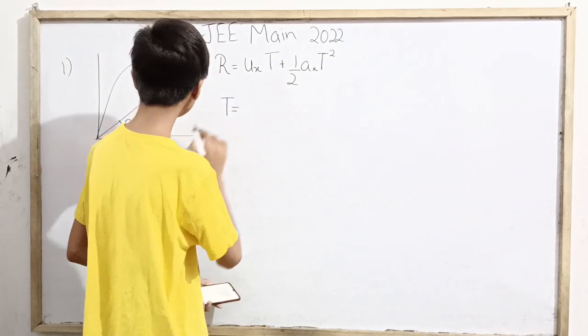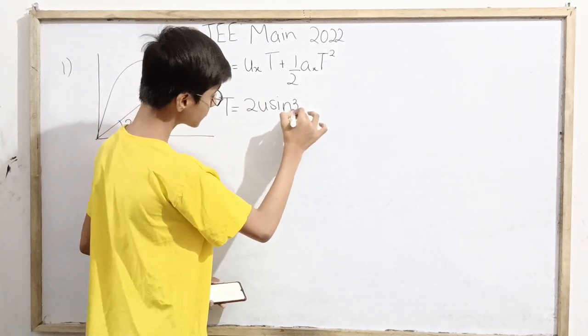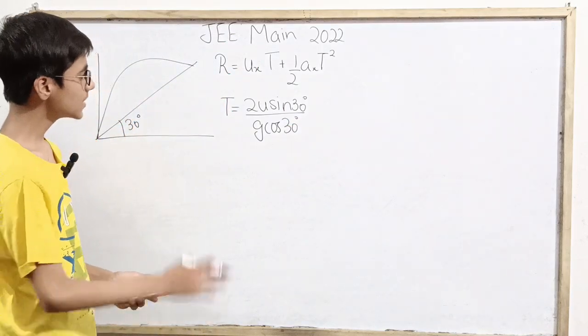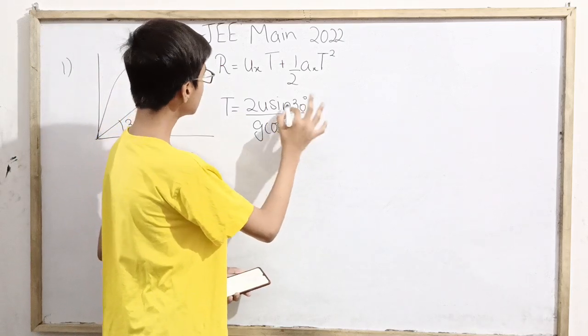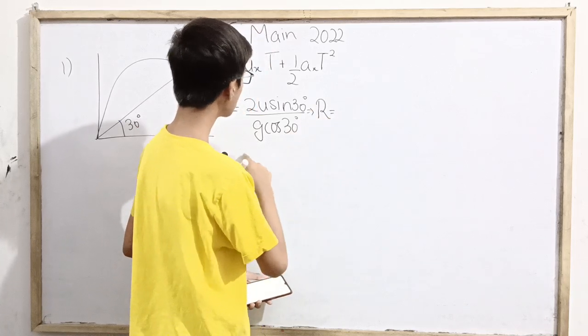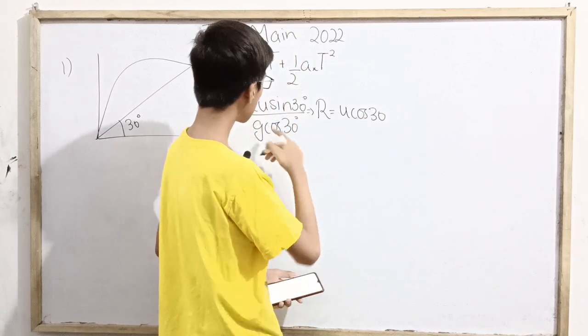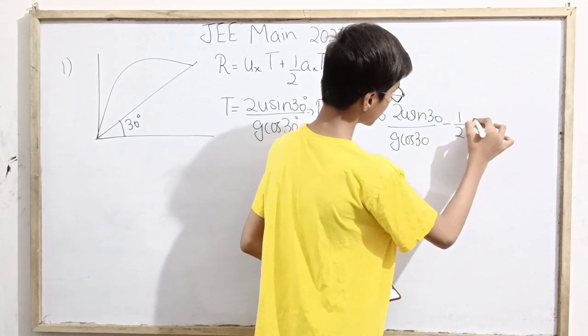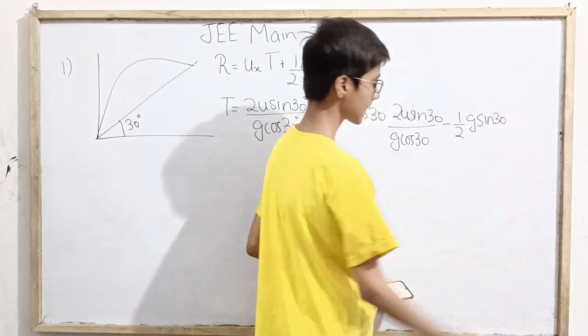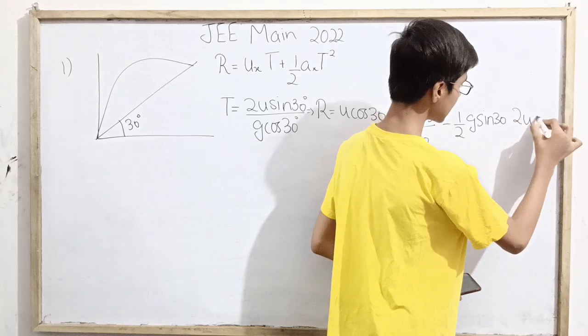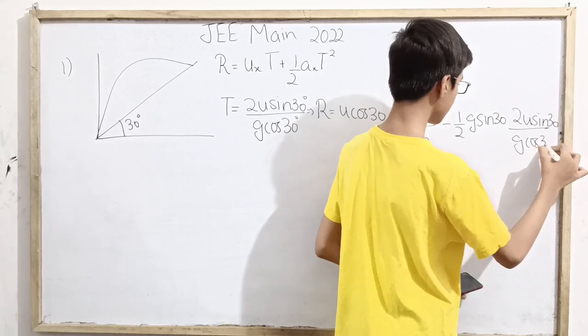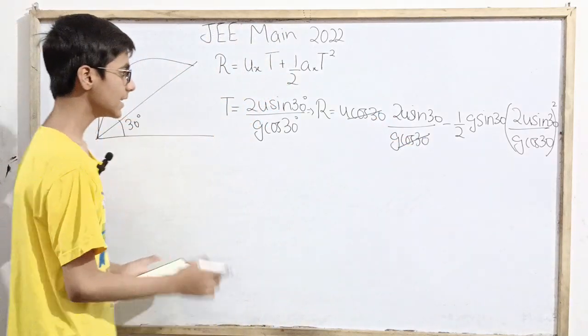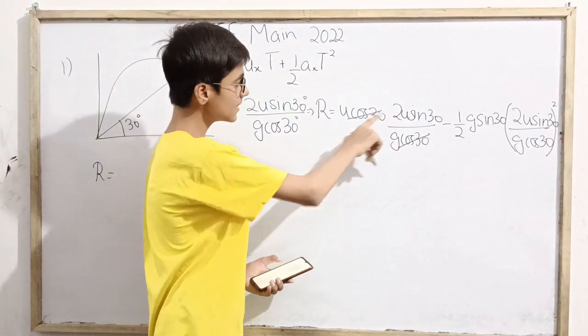Here basically the time of flight is simply 2u sin 30 over g cos 30. So the range formula becomes: ux times time of flight minus half ax times time of flight squared. Substituting the values: 2u sin 30 times 2u sin 30 over g cos 30 minus half g sin 30 times time of flight squared.